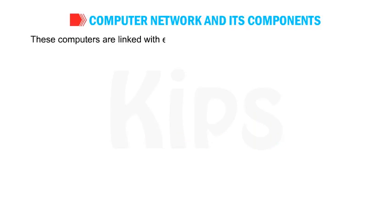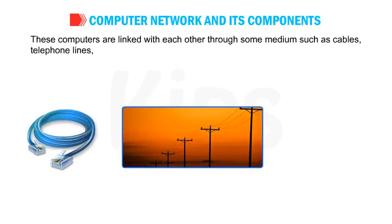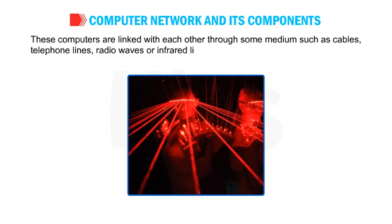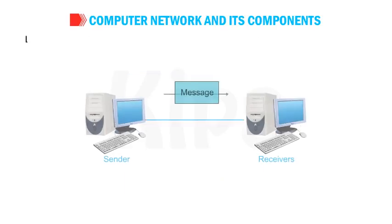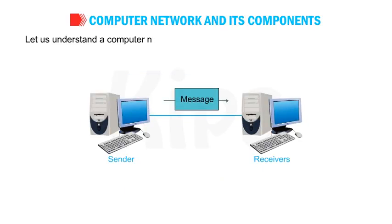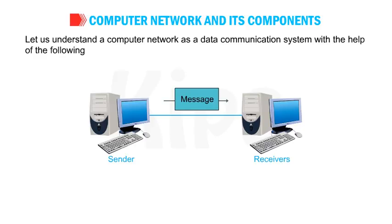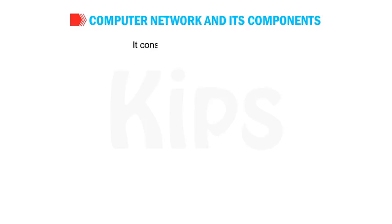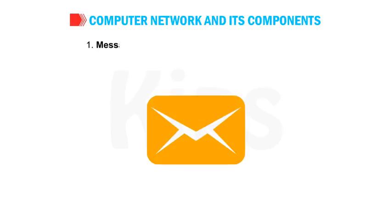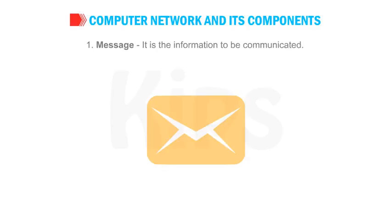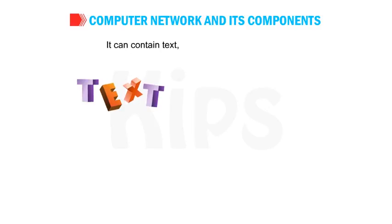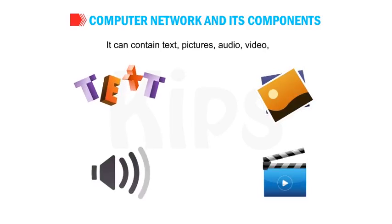These computers are linked with each other through some mediums such as cables, telephone lines, radio waves or infrared light beams. A computer network as a data communication system consists of the following parts. Number 1: Message — it is the information to be communicated. It can contain text, pictures, audio, video, etc.